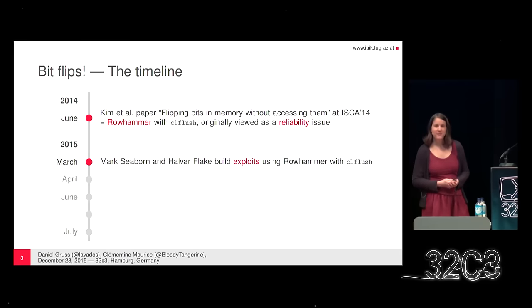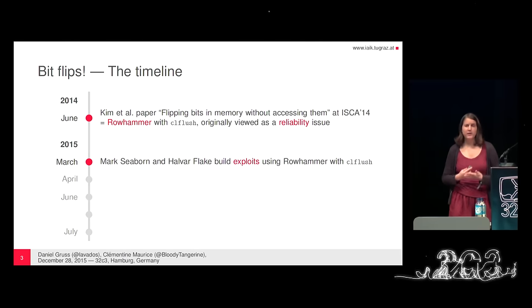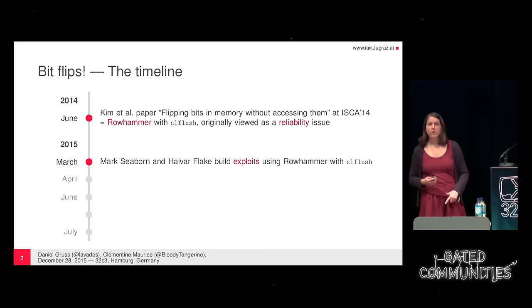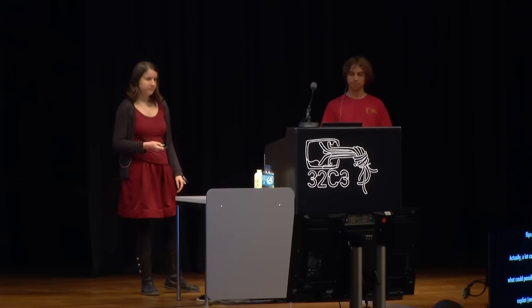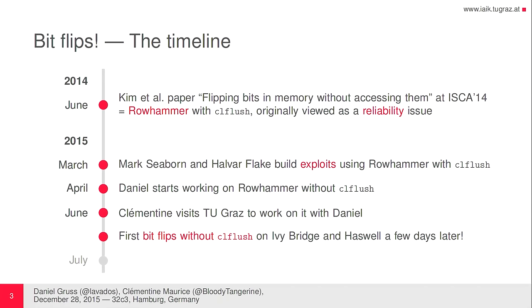Actually, a lot can go wrong. As shown by Seaborn and Halvar Flake, who built not one but two exploits using Rowhammer with CLflush — a sandbox escape and a root exploit. Shortly after that, Daniel started working on Rowhammer without CLflush, and I joined him at Graz to work on it. We got our first bit flips without CLflush on Ivy Bridge and Sandy Bridge a few days later. The bit flips without CLflush are actually the building block of our first bit flips from JavaScript.